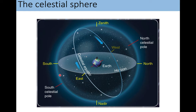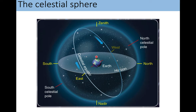You'll see this sphere outlined here in whitish-gray — that is the horizon. Anywhere on Earth, assuming you have no buildings or trees in the way, if you're in a field, you can see half of the celestial sphere — the half that is above the horizon, which is straight out in front of you in all directions. The other half you cannot see because it is below the horizon. The Earth is solid, so you can't see stars on the other side.